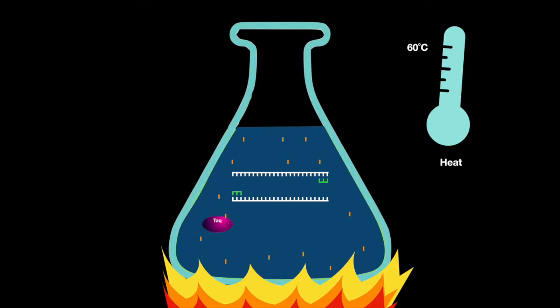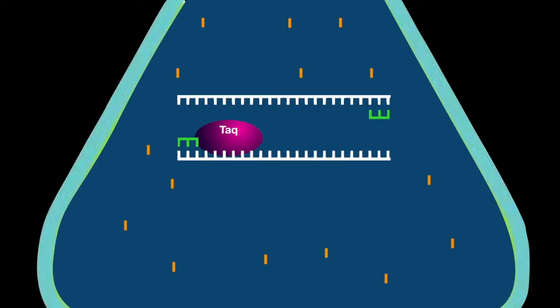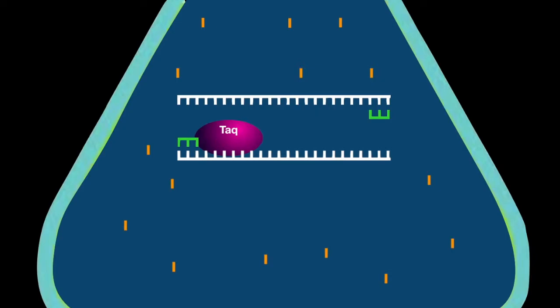The final step is elongation. The sample is heated to 72 degrees Celsius, and the DNA polymerase can extend the new strands by adding the deoxynucleotide triphosphates.